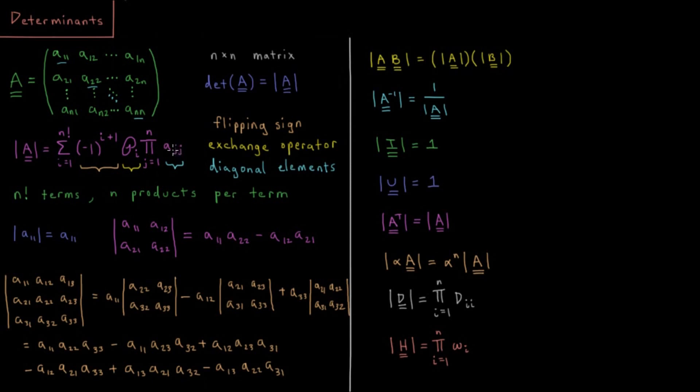So each term in that is going to have n products, because there are n diagonal elements in this n by n matrix. And there are n factorial total terms, so n factorial values where we're going to sum together these n products.